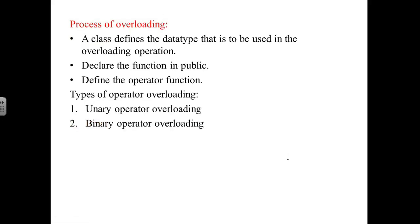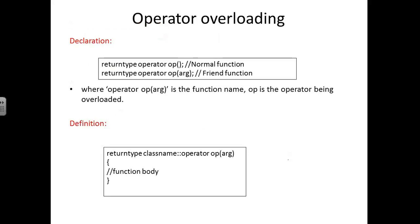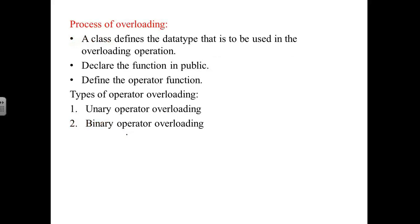The class defines the data type to be used in the overloading operation. We declare the operator overloading function under public mode, then define the operator member function just like a normal member function. From the main program, using the object created for the class, we can access the operator function. There are two types of operator overloading: unary operator overloading and binary operator overloading.